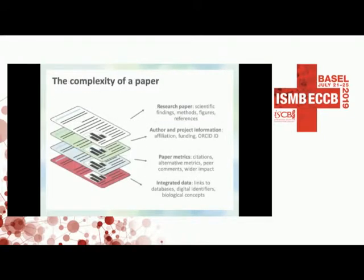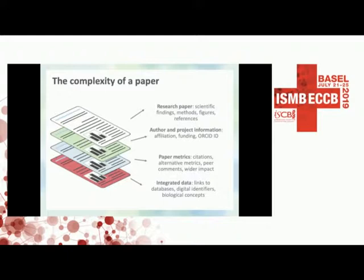Generally, our services are reflective of the complexity of the article itself, because a research article is not just a written report — there are different layers to it. For example, there are the research findings, author affiliations, funding information, metrics on the paper, and also the biological concepts mentioned in the article and the links to various databases. Our services try to reflect this and make it easy for users to access this information.